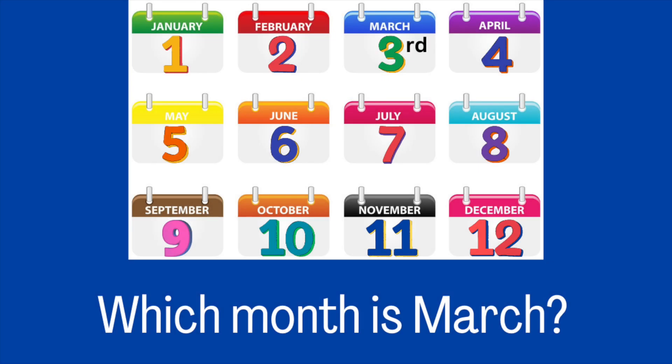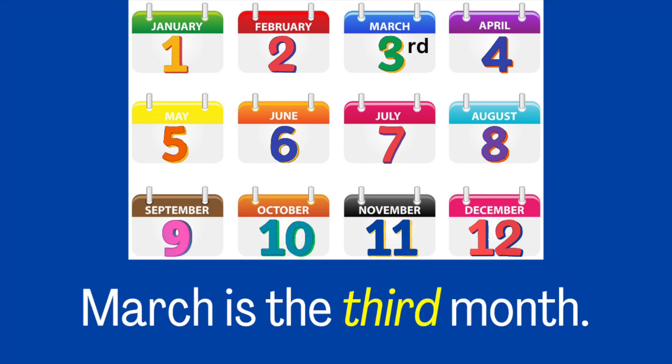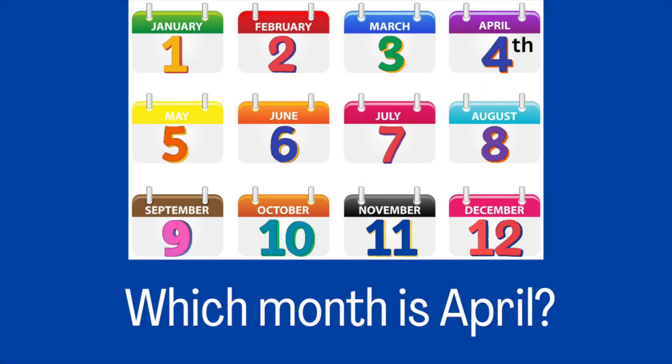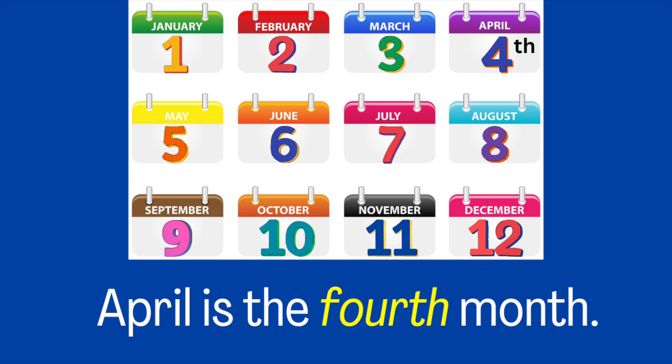March. Which month is March? March is the third month. Which month is April? April is the fourth month.